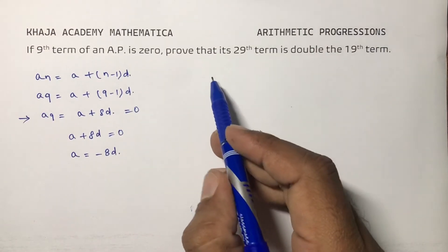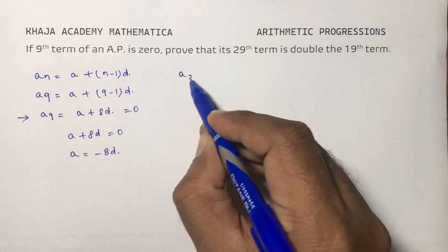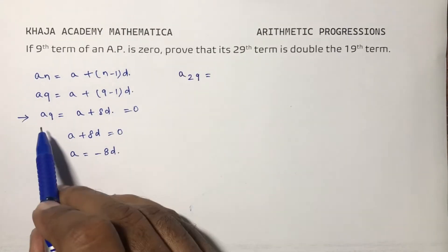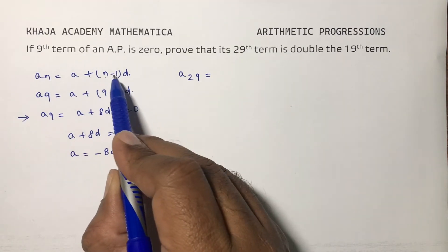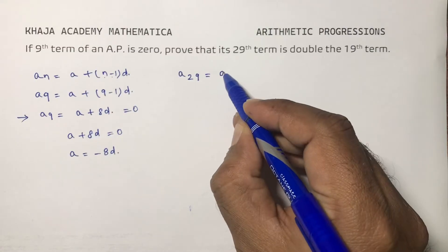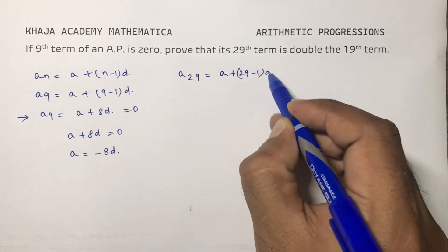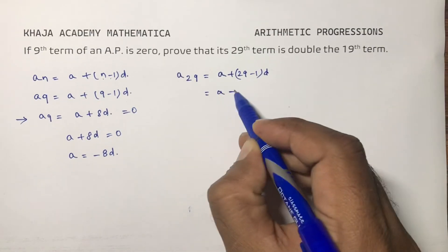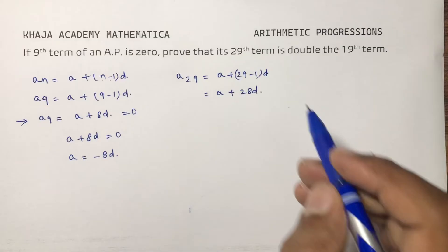Now you need to prove 29th term is double the 19th term. So 29th term will be A + (29-1)D, that is A + 28D.